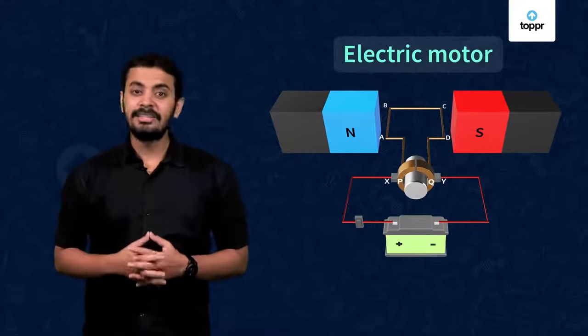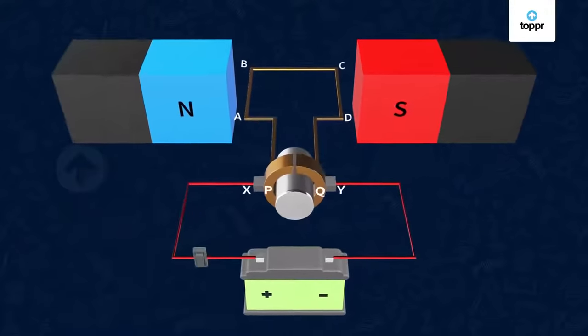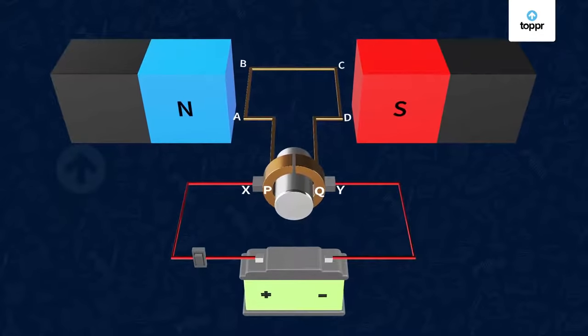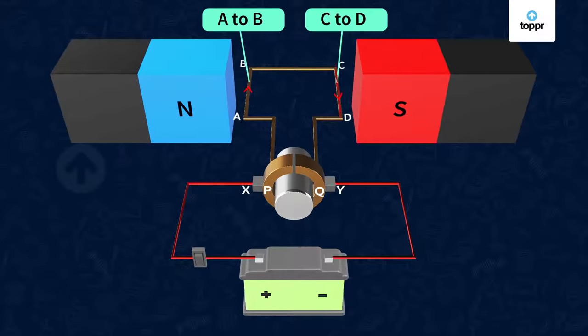Now, let's understand how it works. When the switch is closed, the current enters into the coil ABCD through X and leaves through Y. Notice that the direction of current is A to B in the arm AB and C to D in the arm CD. That is in the opposite direction to current flowing AB.